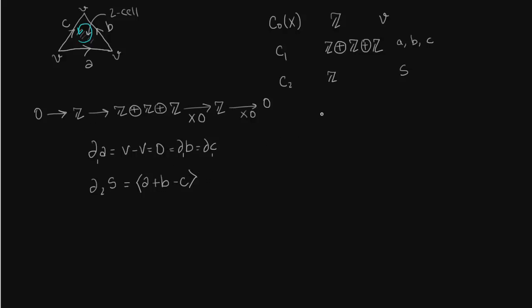This is nothing but linear algebra. What is H0? C0 over image of delta 1. Image of delta 1 is 0 as you can see. So this is very clear, we get Z. What about H1? Kernel of delta 1 which is Z³ over image of delta 2. Image of delta 2 is generated by the linear combination of 3 edges. This will just give us Z. Numerator is Z³, so we get Z².